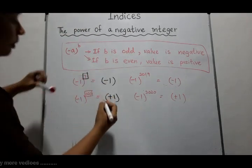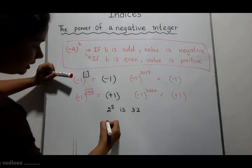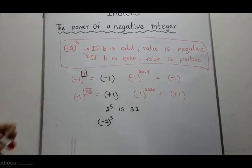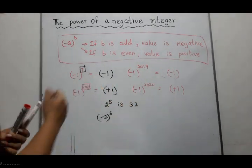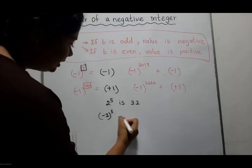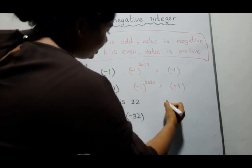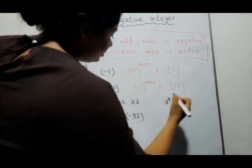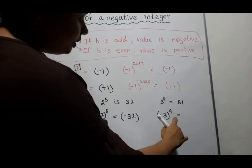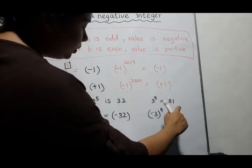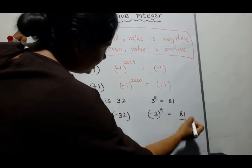Here is another example. You are given that 2⁵ = 32. What is the value of (−2)⁵? We multiply 2 five times, giving 32. The index is 5, which is odd, so the answer is negative 32. Similarly, given 3⁴ = 81, what is the value of (−3)⁴? We multiply 3 four times to get 81. The index is even, so the answer is positive 81.